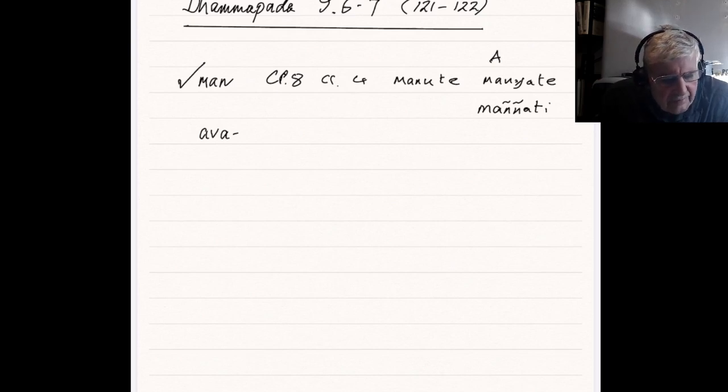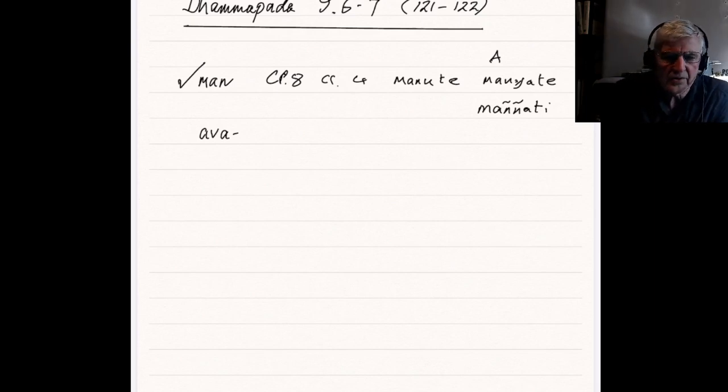So, ma avamanyeta, let one not underestimate. For a negative imperative, you can use navamanyeta, not in Pali. In Sanskrit, it's regarded as more literally better to use ma, for a negative imperative. And here, that's what we see being used here. Ma avamanyeta papasa. Do not, or let one not, not imperative, not repetitive. Let one not underestimate evil.